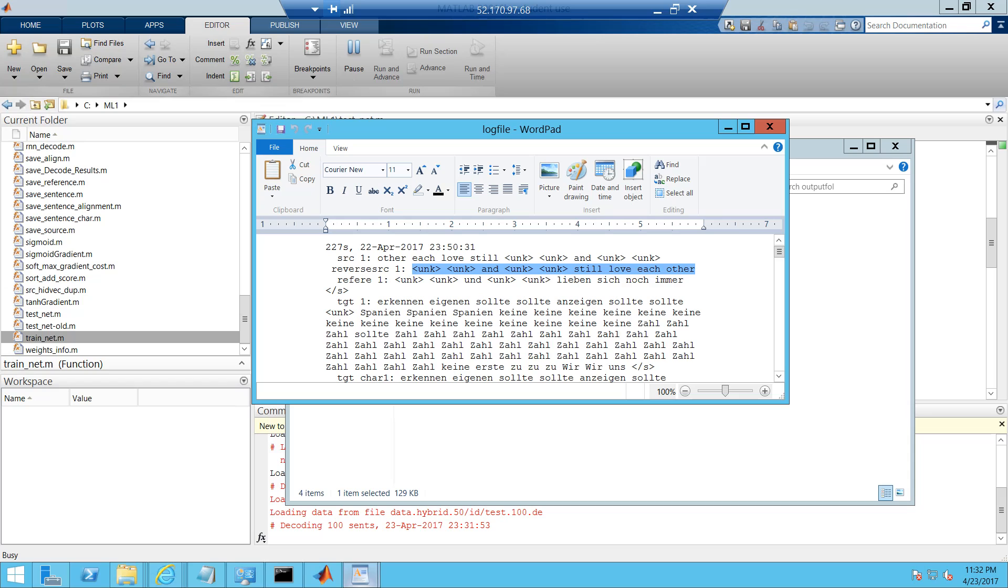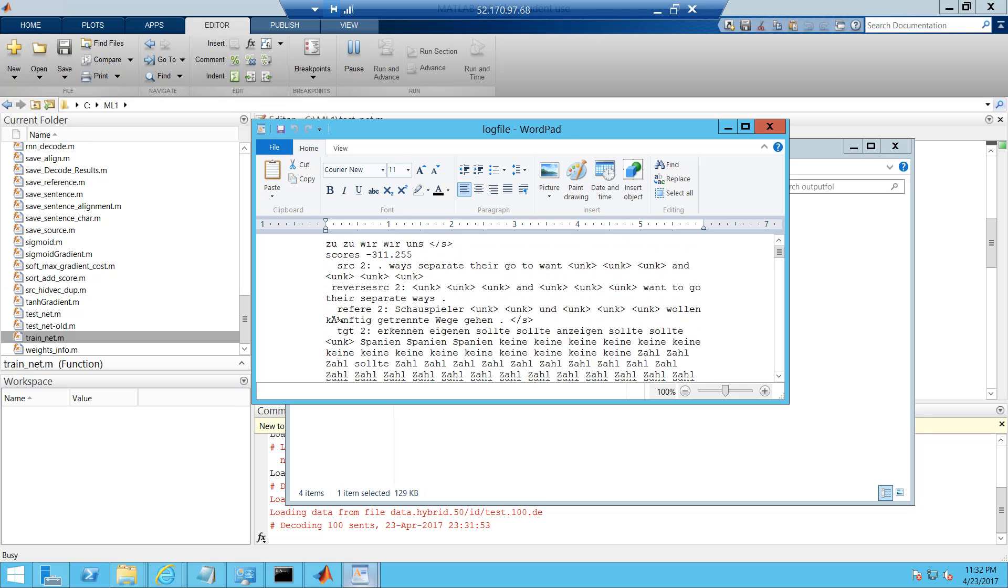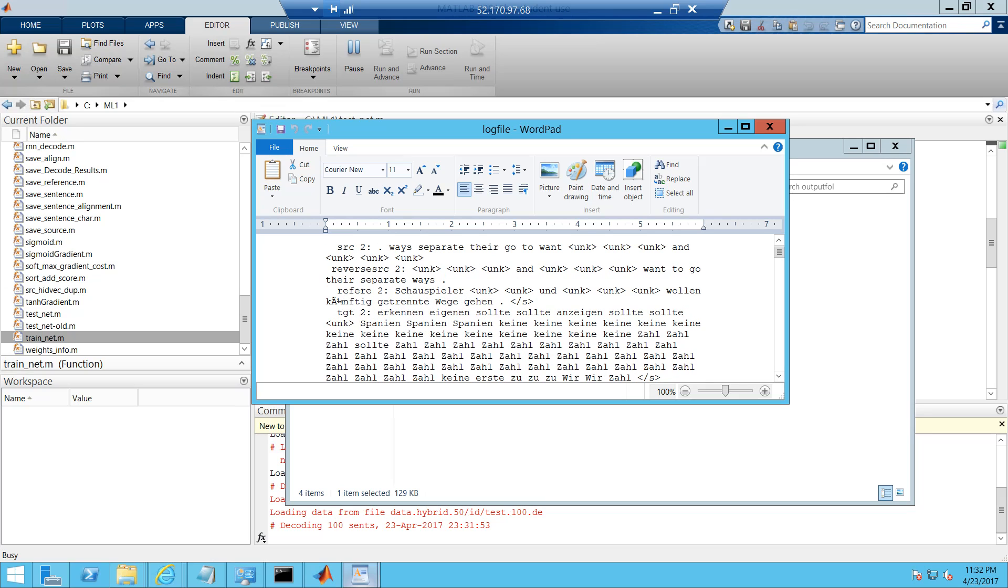Once we have this, we have the translation. And some of the words are printed as unknown. It's translating most of the words. In the same way, you can also see it for the other source as well. This is the log file which gives you a detailed information.